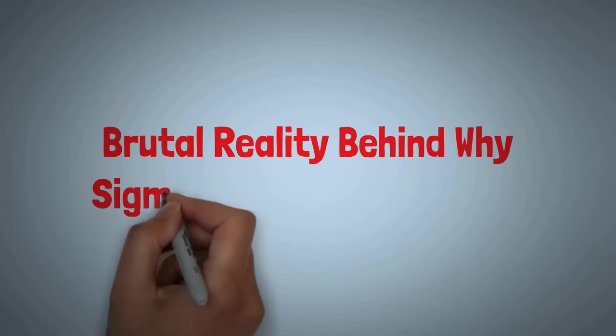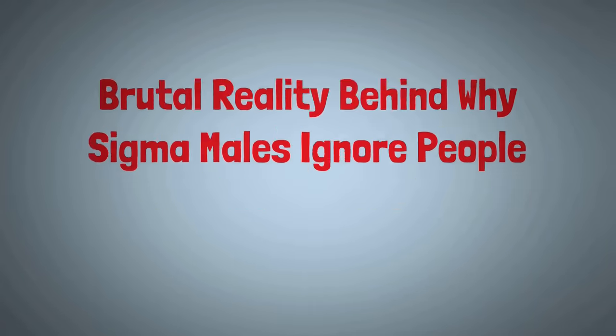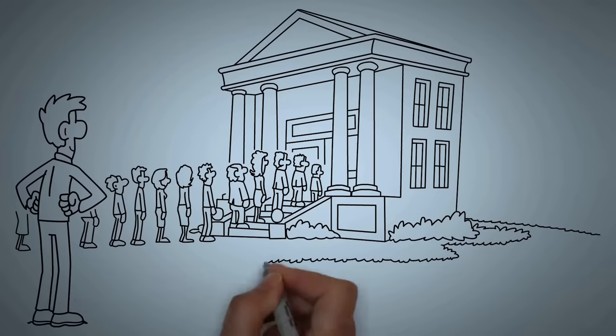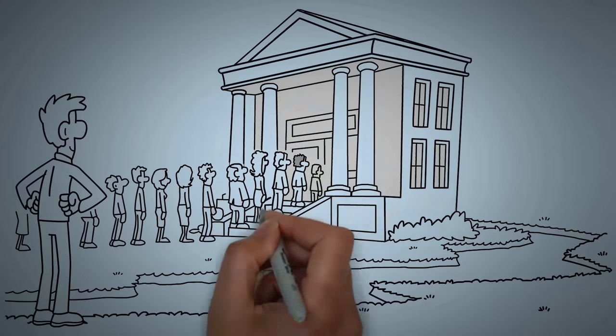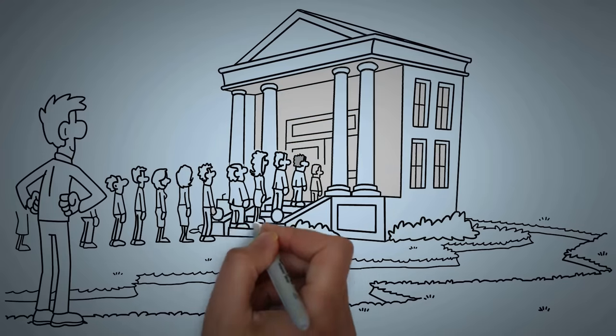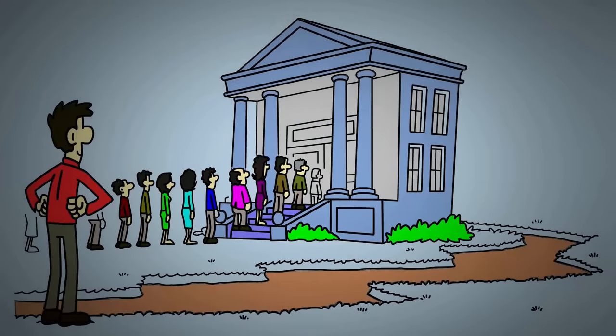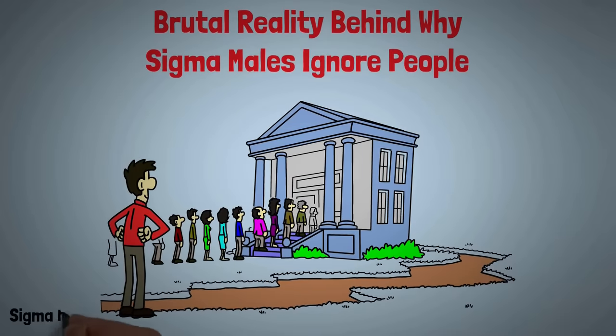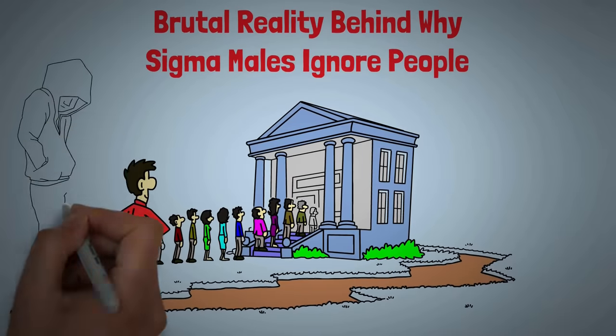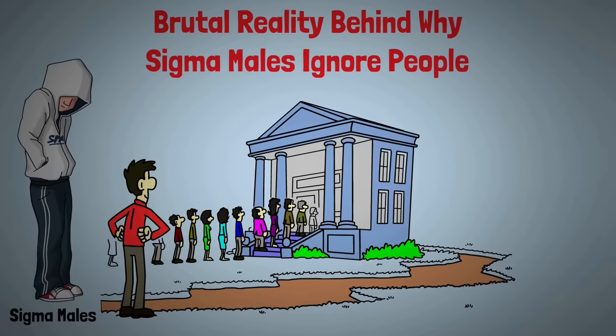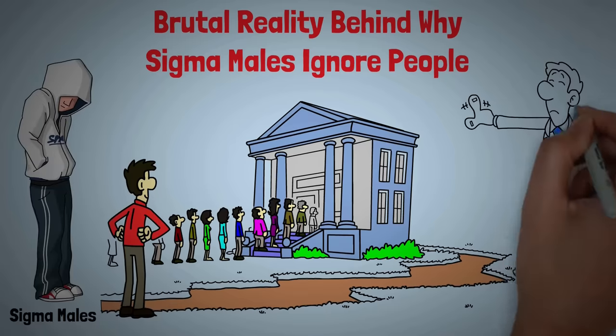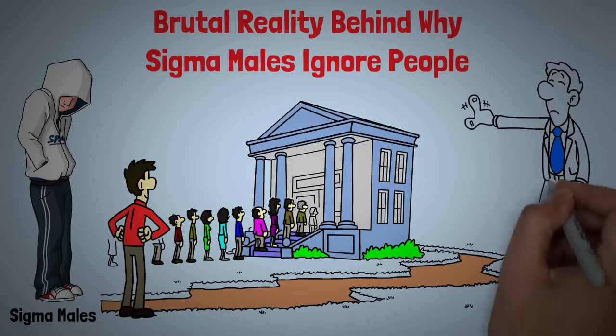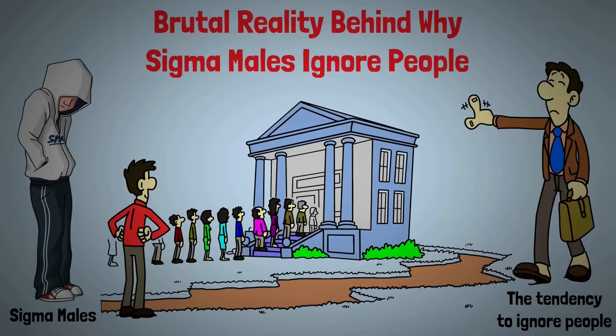Have you ever been captivated by the air of mystery surrounding someone who seems to stand apart, defying the norms of social circles? These individuals, known as sigma males, exude an aura of intrigue that garners curiosity and respect. Yet there lies a brutal reality beneath their enigmatic exterior: the tendency to ignore people.